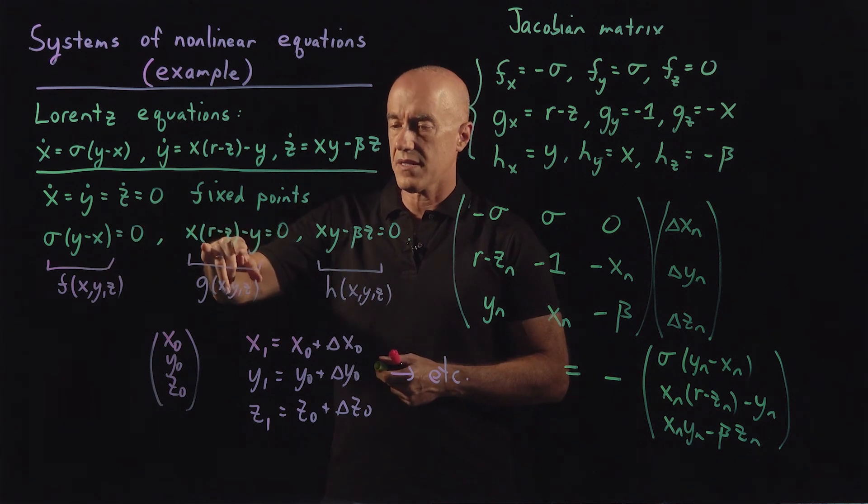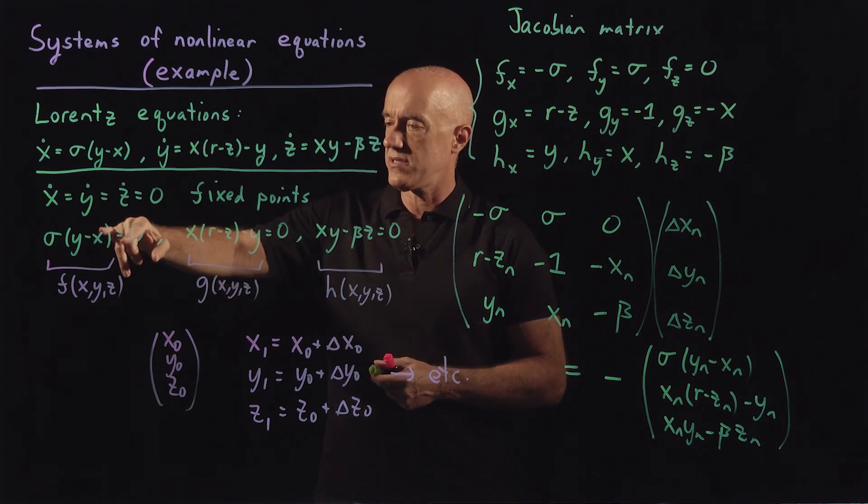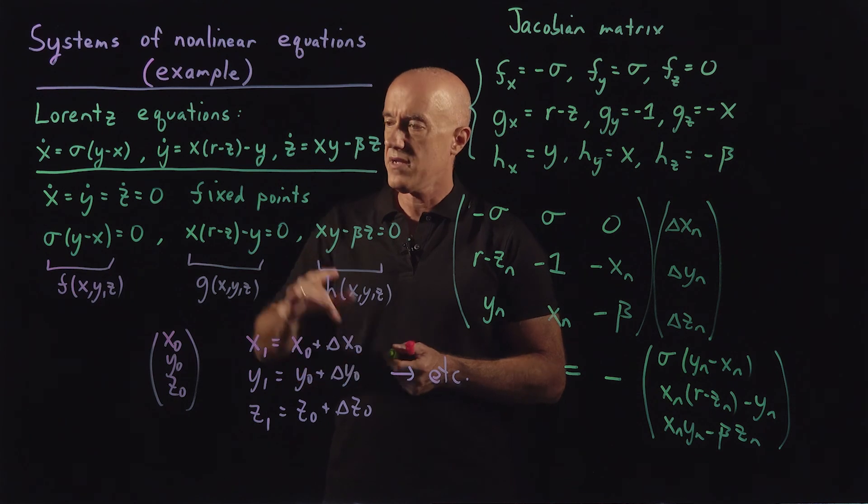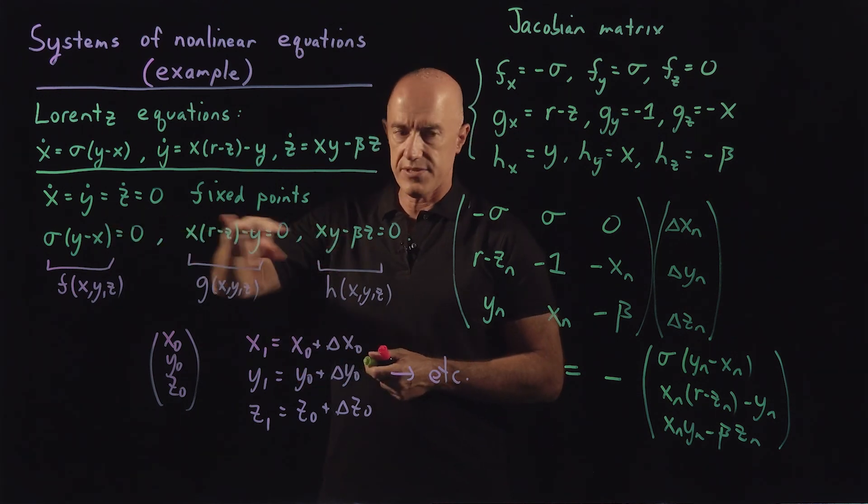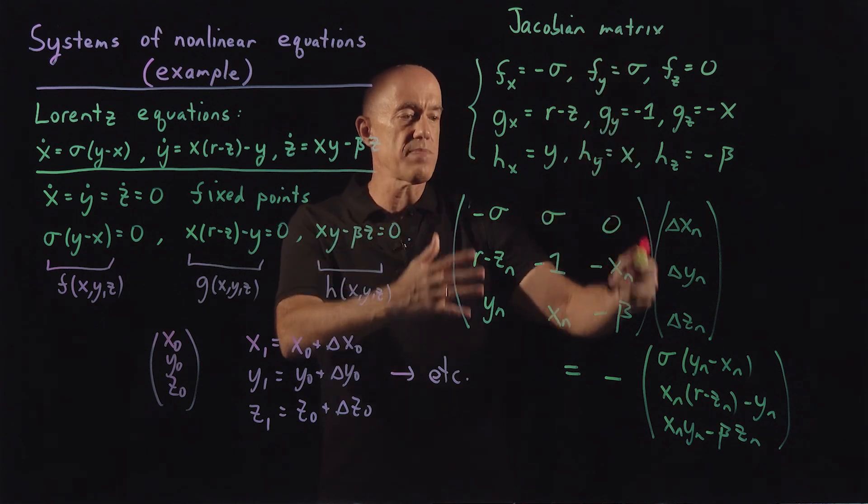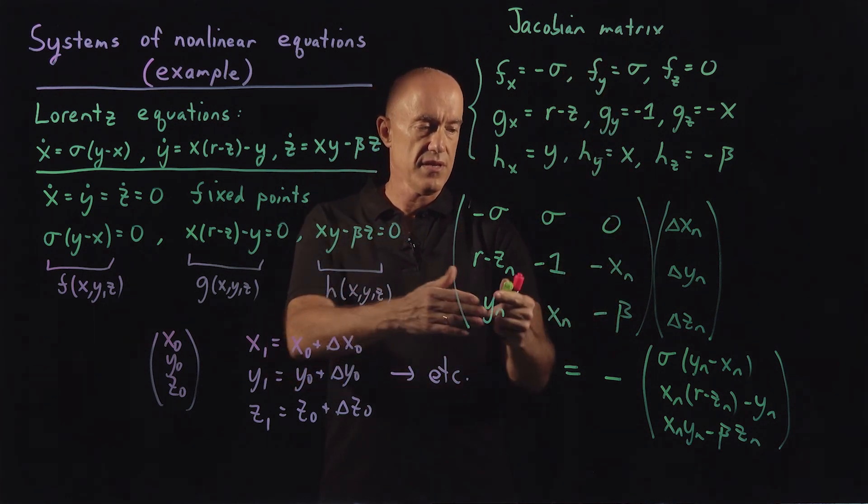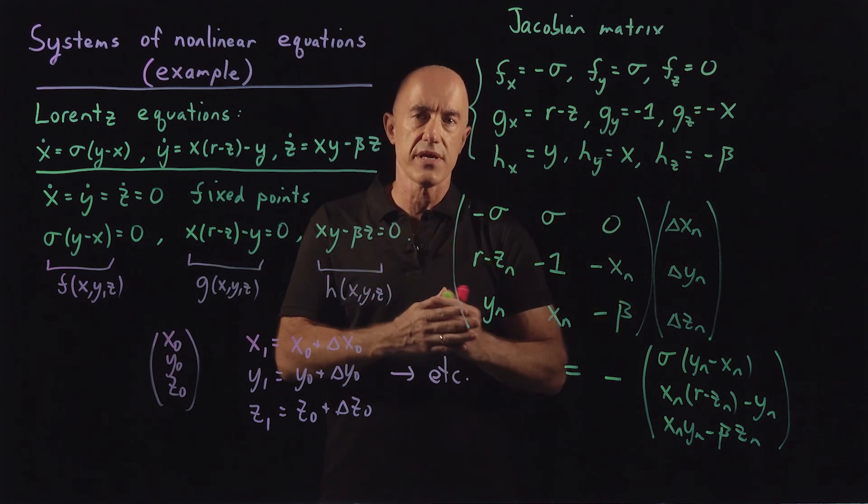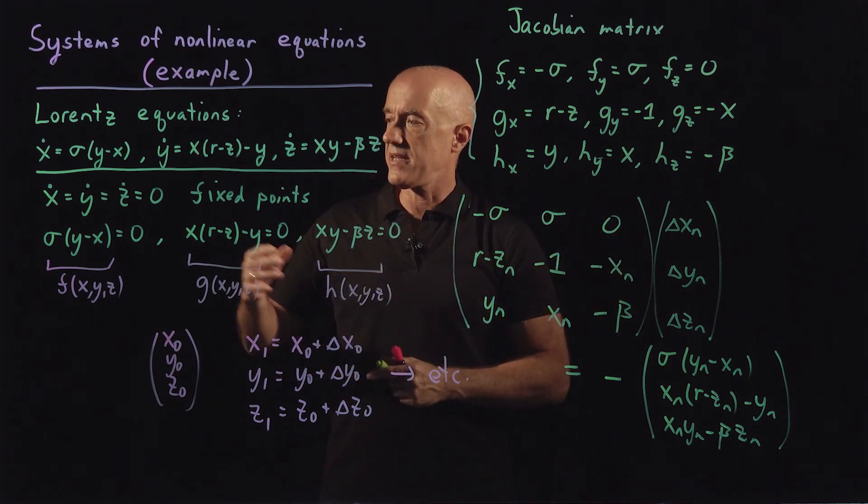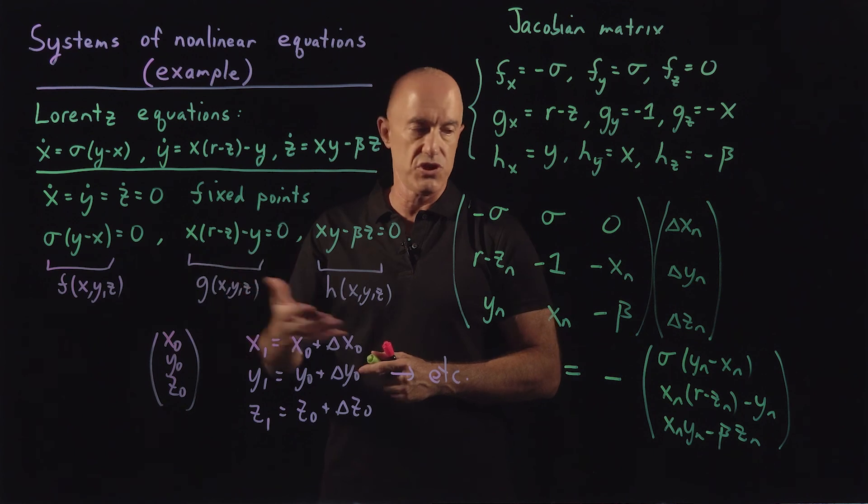Then we end up with three coupled nonlinear equations. We're looking for the roots of these three equations. And I set up an iteration scheme based on Newton's method. So we have the Jacobian matrix, which we compute by finding the partial derivatives of f, g, and h. These are the increments.